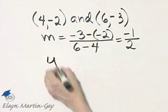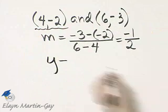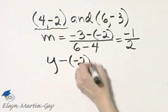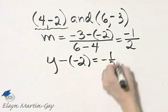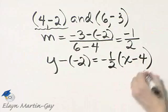Remember it's y minus, I'll simply choose this point, but it makes no difference. Y minus the y-value of the ordered pair is equal to slope, negative one-half, times x minus the x-value of 4.